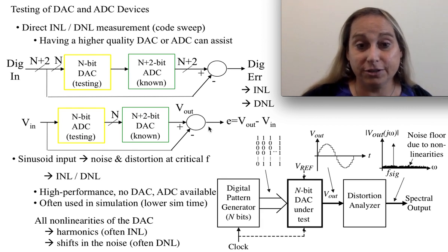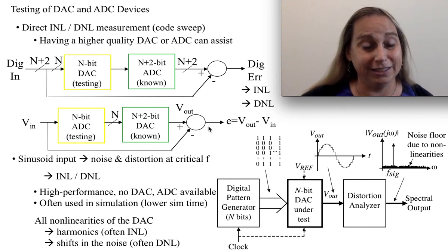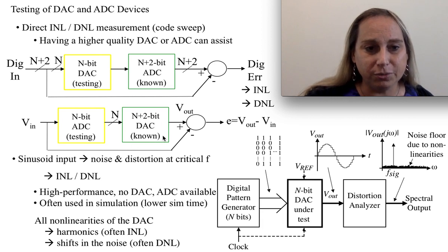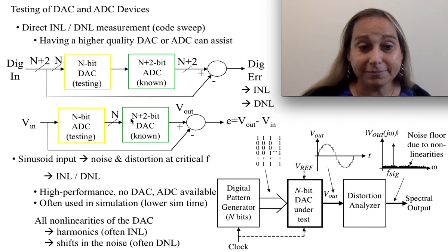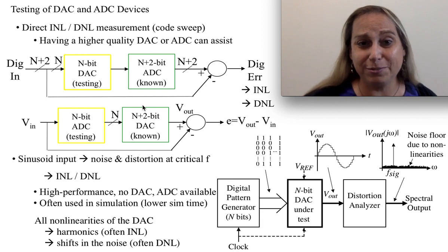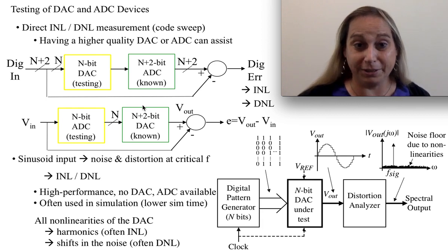A lot of times you might have an N-bit design and a known DAC that's N+2 bits running at least to that same frequency, or a known ADC that's N+2 bits. N+2 gives you sufficient linearity and enough headroom to see even sub-bit questions that are going on.